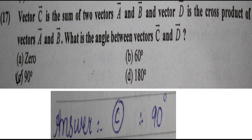Next question: vector c is the sum of vectors a and b, and vector d is the cross product of a and b. What is the angle between c and d? Since c is the sum of a and b, it lies in the same plane as a and b. Since d is the cross product of a and b, it is perpendicular to that plane, and therefore perpendicular to c. The angle between c and d is π/2 or 90 degrees, so option C is correct.